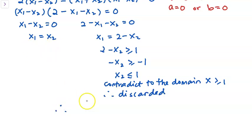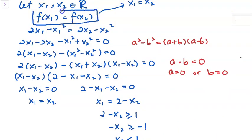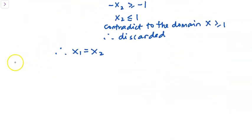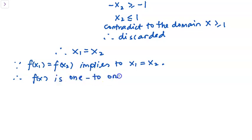We only accept the answer x1 equals x2. For the algebraic method, we started from the statement f(x1) equals f(x2), and we were able to prove this leads to x1 equals x2. Therefore our conclusion is: since f(x1) equals f(x2) implies x1 equals x2, f(x) is a one-to-one function.